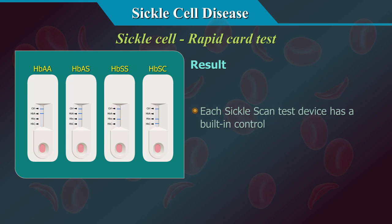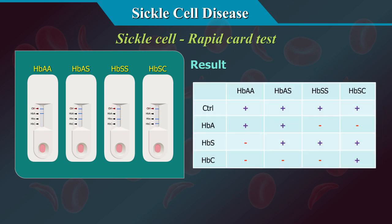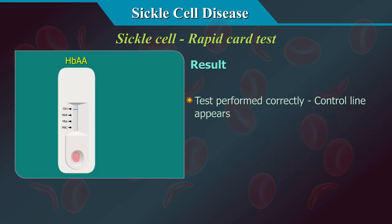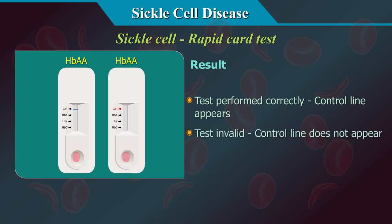Each sickle scan test device has a built-in control. A dark blue coloured line in the detection window at the control line position is an internal positive procedural control. The control line will appear if the test procedure has been correctly performed. If the control line does not appear, the test is invalid and a new test must be performed. If the problem persists, contact your local vendor.